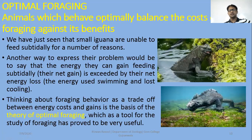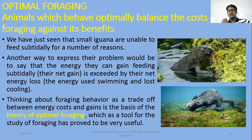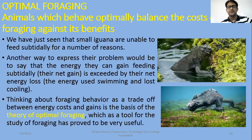Another way to express this problem is to say that the energy they gain from feeding subtidally — which we call net gain — is exceeded by their net energy loss. The energy is used in swimming and cooling. So there are two groups: those feeding in the subtidal zone depending upon their body size and swimming abilities.